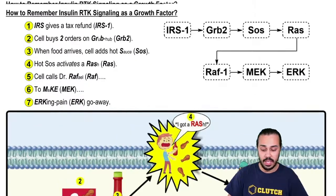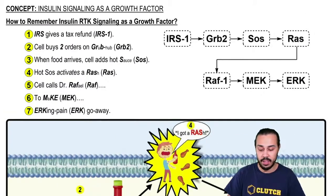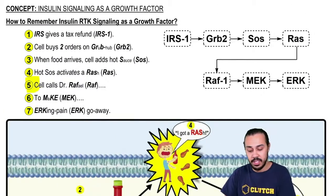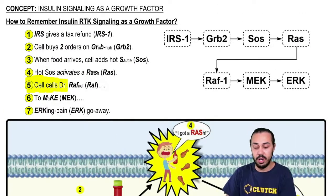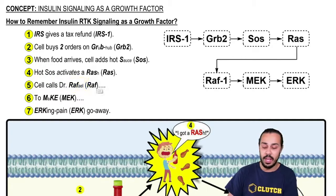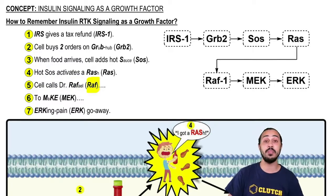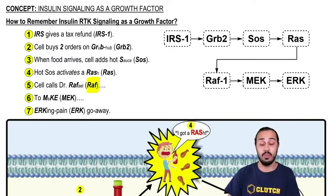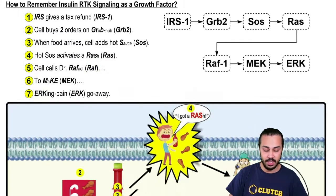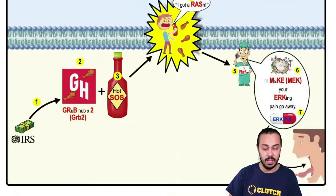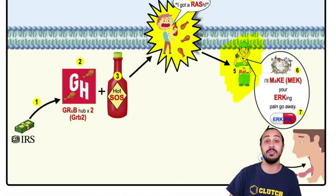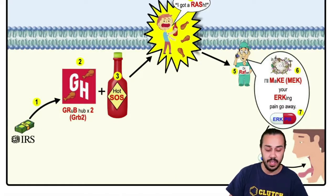In step 5, the cell decides to call Dr. Raphael. Dr. Raphael represents the MAPKKK called RAF1. In the image, you can see Dr. RAF here on the phone, since the cell is giving him a call.